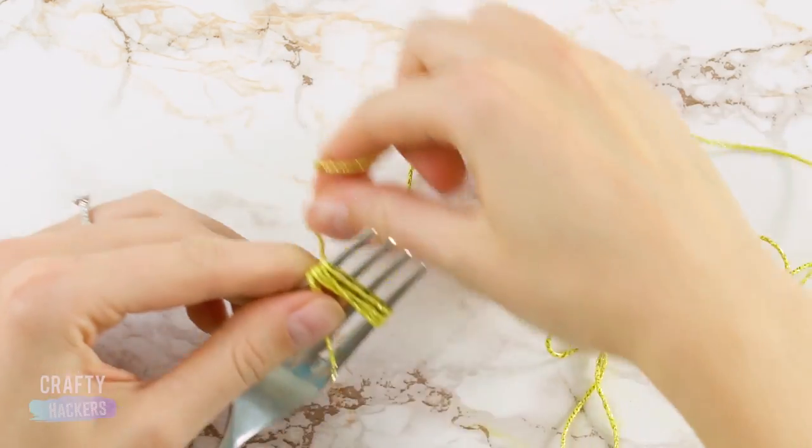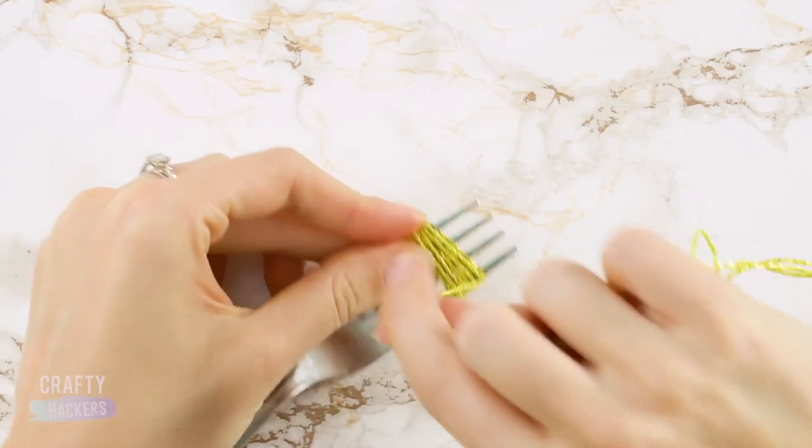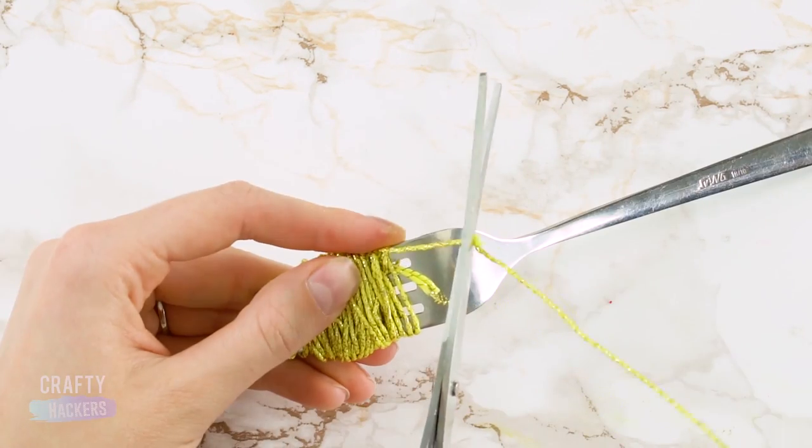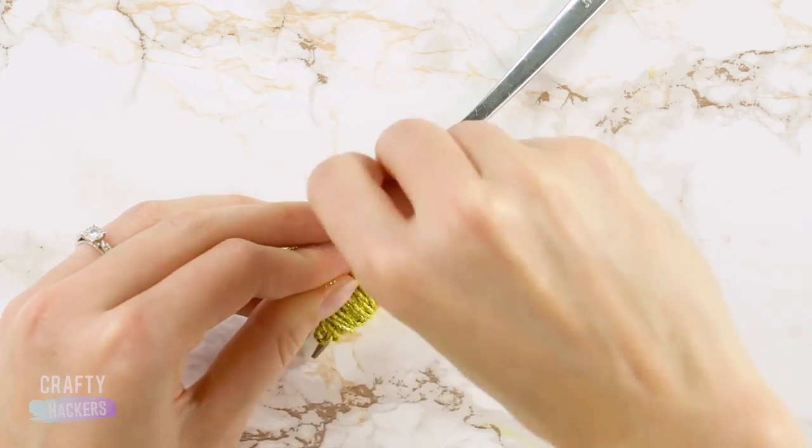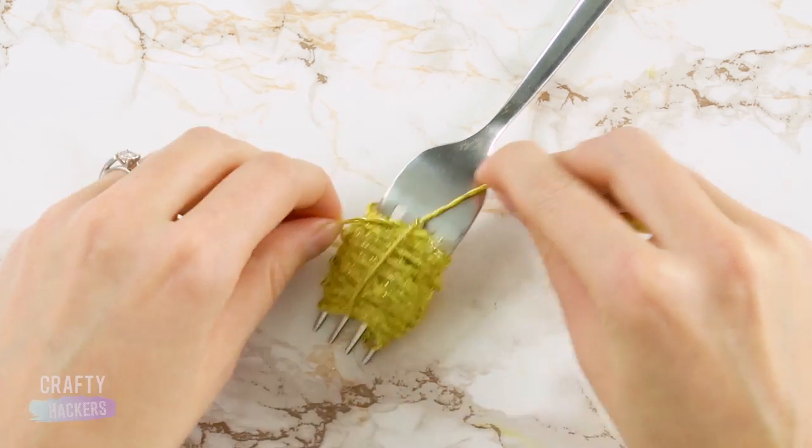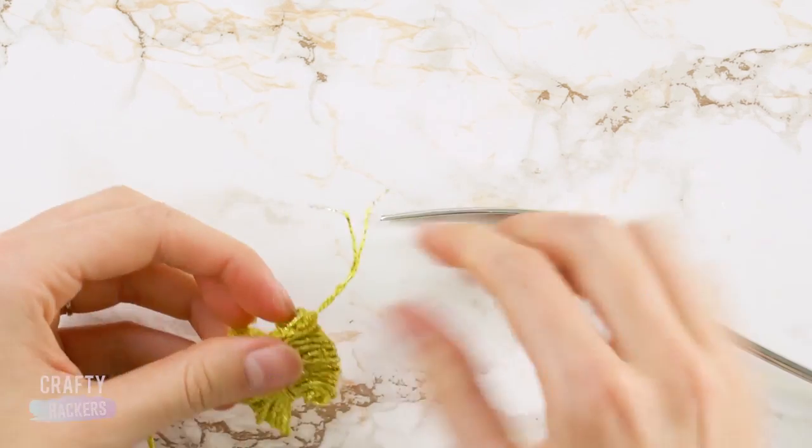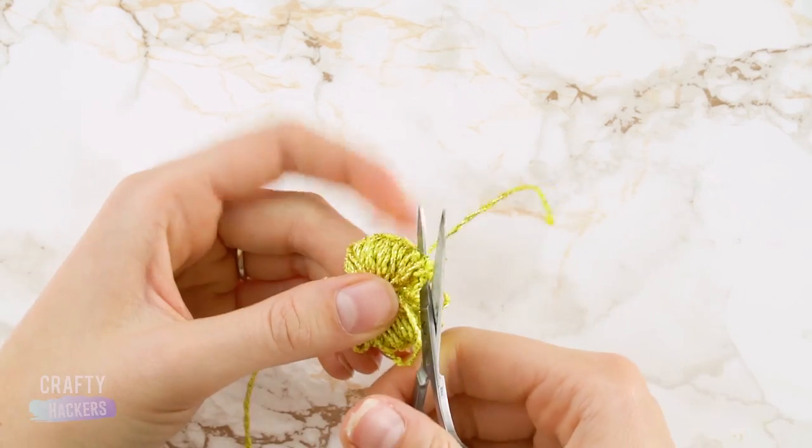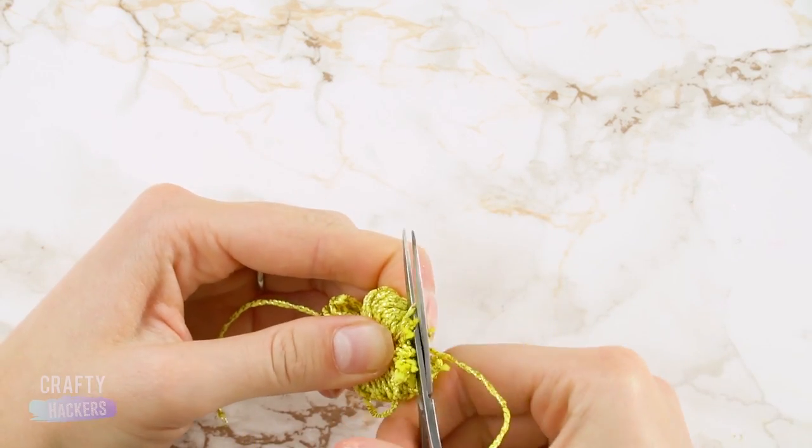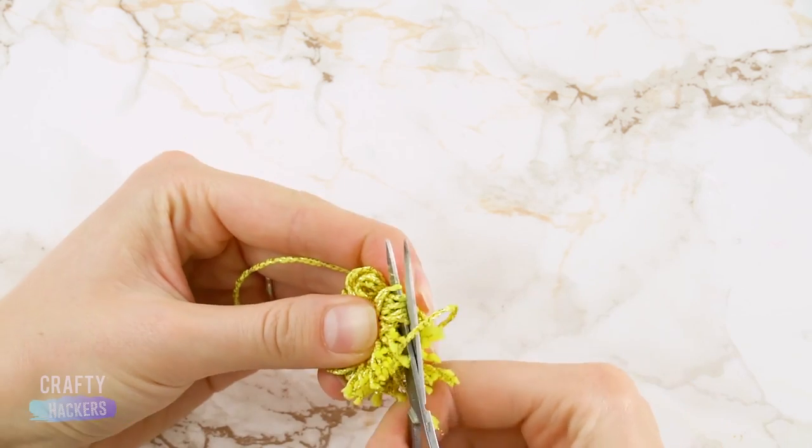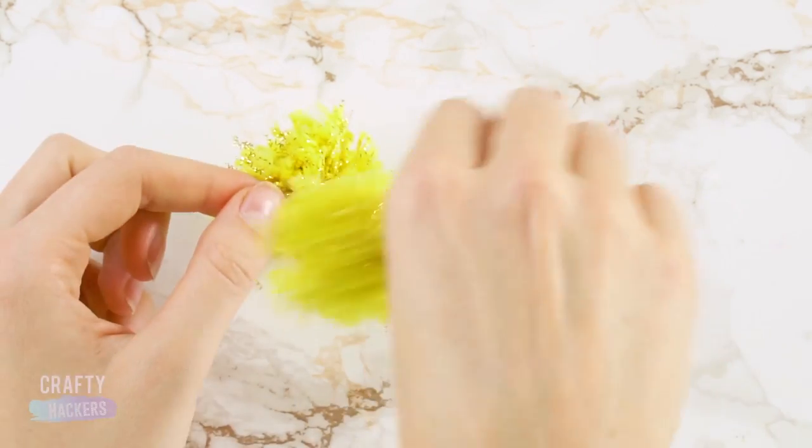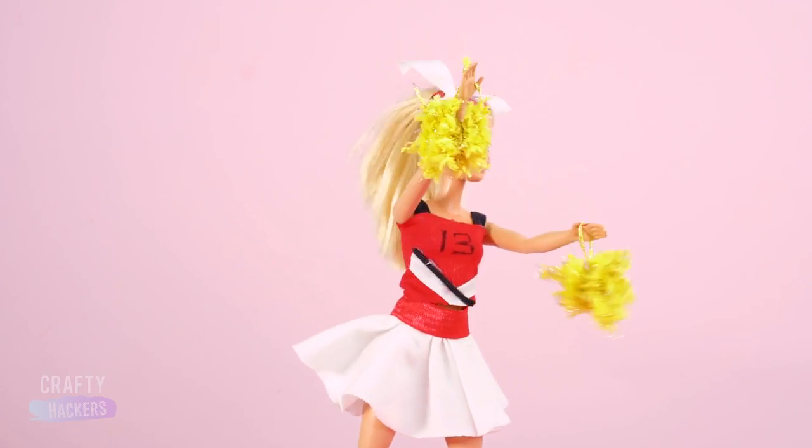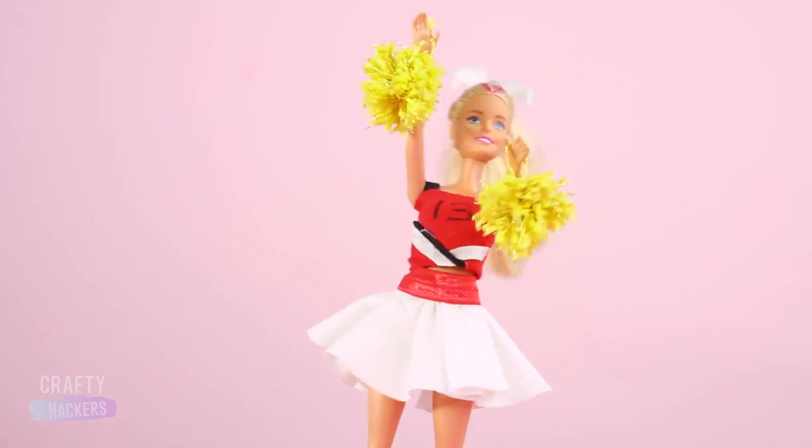Ready to make the pom-poms? Wrap some string around a fork, like this. Snip and tie the end pieces around the middle to gather all the strings. Pull it off the fork, and cut the string at the loops. Fan them out, and you've got some sparkling pom-poms for Barbie to shake at the homecoming game. Go Wildcats!